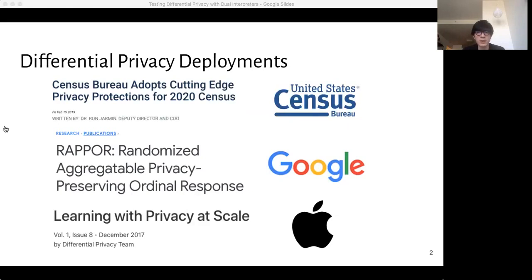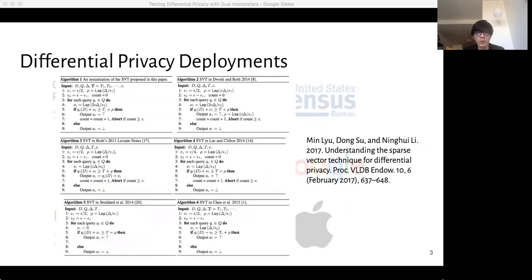However, actually determining whether a program is differentially private or not is very error-prone. Even a very small difference could mean being differentially private or not. As this VLDB paper from 2017 showed us, here are six variants of the same algorithm published by experts in the field. They all look very similar, but only two of them have the intended differential privacy property.